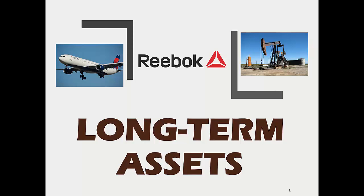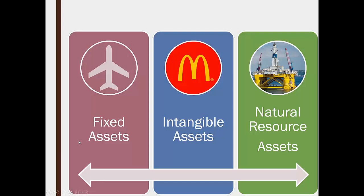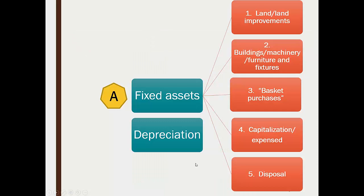We are now going to move on to Chapter 8, which covers long-term assets. There are three basic types of assets: fixed assets, which you can see, feel, and touch — things like airplanes, cars, and furniture; intangible assets, which you can't see but are still worth a lot; and natural resources, like coal, oil, or diamonds, that a company owns and is actually extracting.